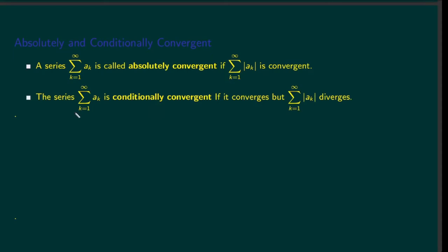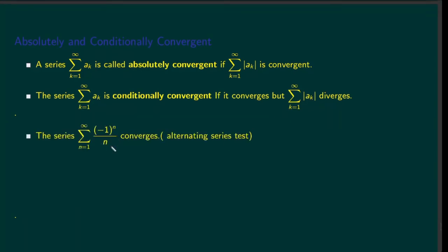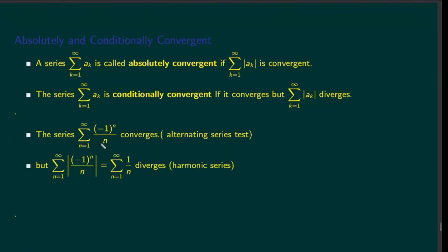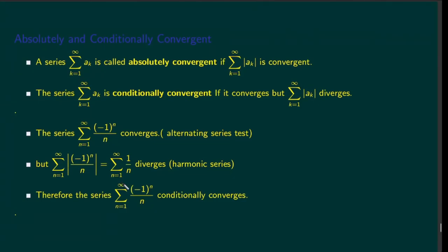There are series which are convergent but not absolutely convergent — in other words, the series with absolute values diverges. For example, look at this series: we can easily apply the alternating series test and conclude that this is convergent. But if we look at the series made out of the absolute values of this one, that one diverges, because this is the harmonic series. So the original series is convergent but the absolute value series is divergent — this is an example of a conditionally convergent series.